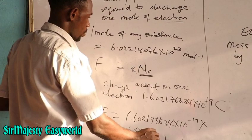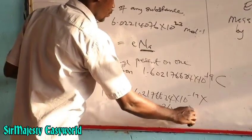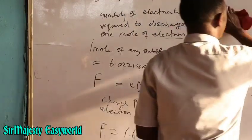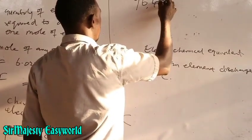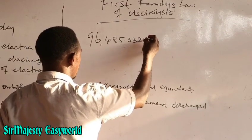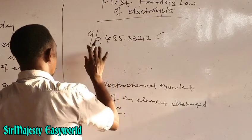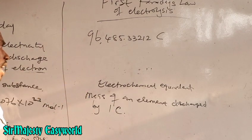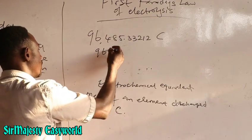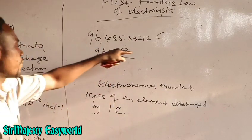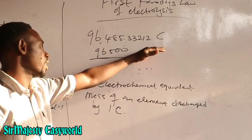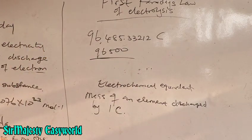Multiplying the charge on one electron by Avogadro's number gives approximately 96,485.33212 coulombs of electricity. This is the 2019 redefinition of Faraday's constant — the accurate value. However, most exam bodies accept the approximation of 96,500. So we have discovered that 96,485.33212 coulombs of electricity is required to discharge one mole of electrons — that is one Faraday.